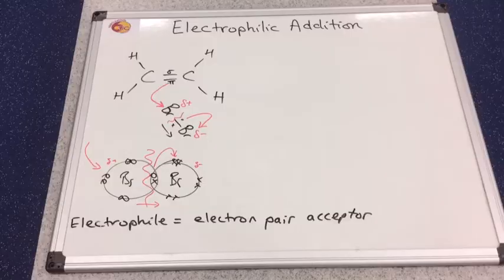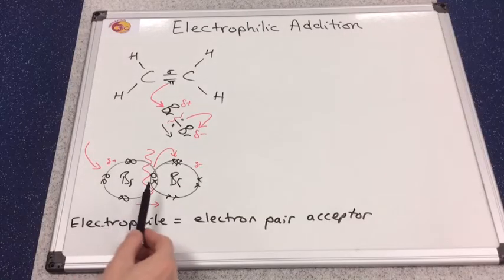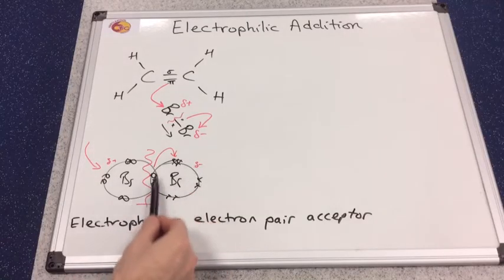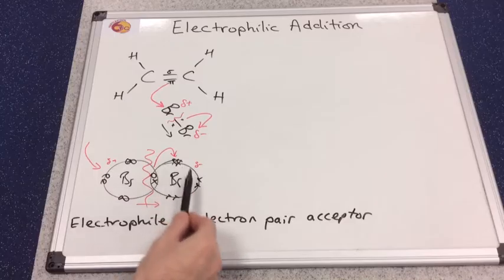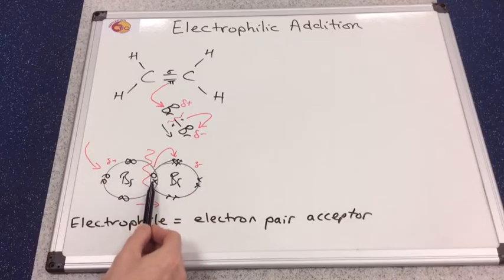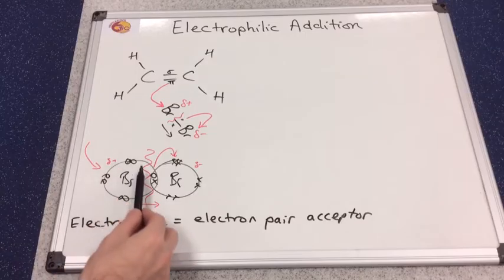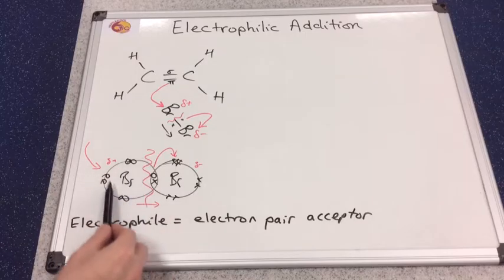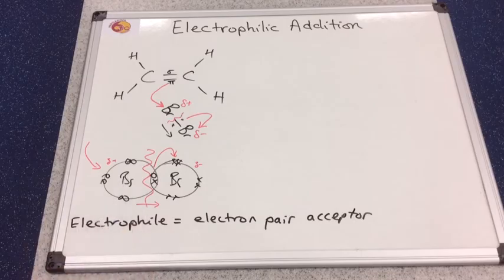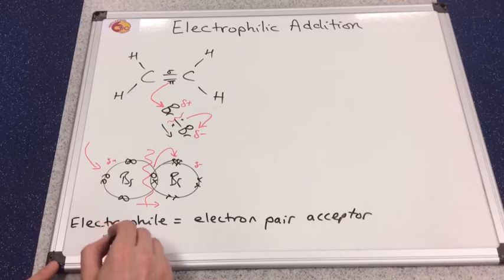You can see from the dot and cross diagram that this right-hand bromine atom receives both of the electrons that were in the bond. This bromine part of the molecule, this bromine atom, doesn't get any of the electrons from the bond, and so this is known as heterolytic fission.